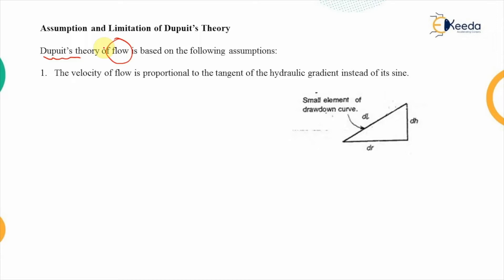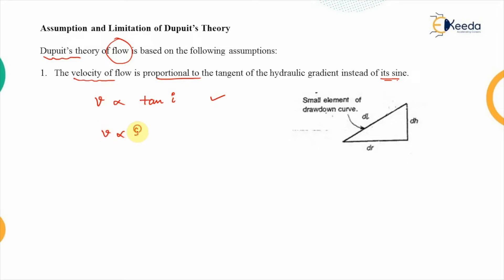The first assumption is that the velocity of flow, denoted by small v, is proportional to the tangent of the hydraulic gradient instead of its sine. So if we represent the hydraulic gradient by i, it is proportional to tan(i) and not proportional to sine(i).